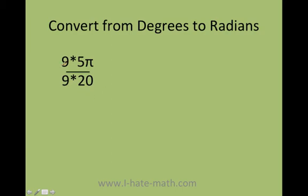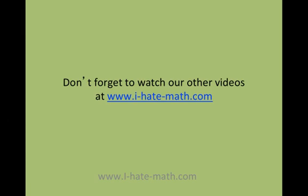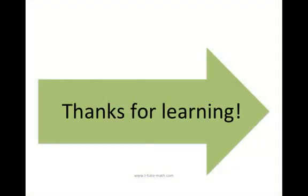And look what happens. I eliminate these two guys. Also, 5 over 20, since I divide both by 5, is going to be pi over 4. Awesome. That's it. Please don't forget to watch our other videos. And also, thanks so much for learning.